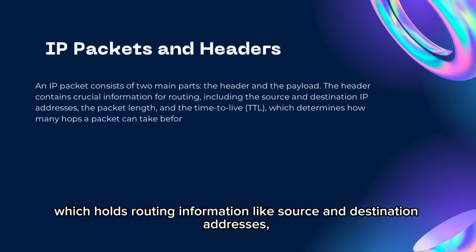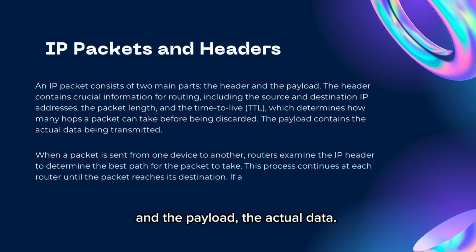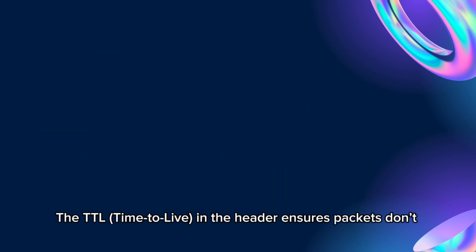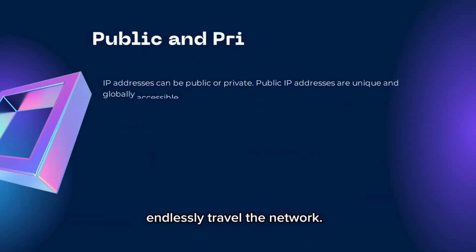An IP packet has two parts: the header, which holds routing information like source and destination addresses, and the payload, the actual data. The TTL, or time to live, in the header ensures packets don't endlessly travel the network.